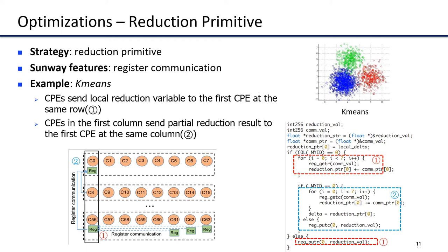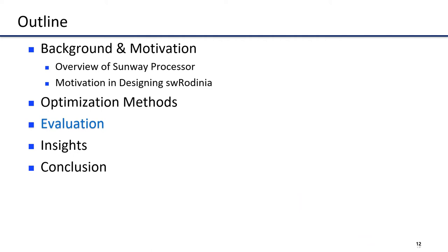The fourth optimization is the reduction primitive. In K-means, we use a reduction operation based on register communication instead of accessing main memory. As shown in the figure with corresponding code: in step 1, each CPE sends its local reduction variable to the first CPE in the same row. The CPEs in the first column receive the variables, perform the reduction, and derive a partial result for each row. In step 2, the CPEs in the first column send the partial result to the first CPE in the same column, which performs the final reduction. Finally, CPE0 writes the final result to main memory.